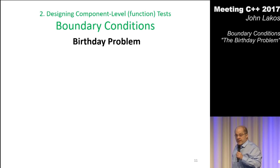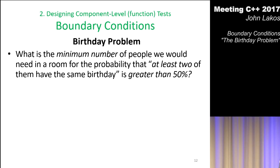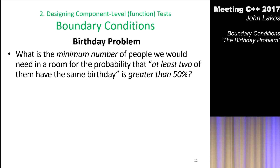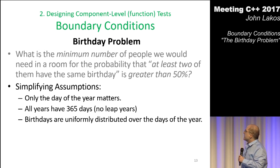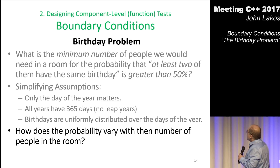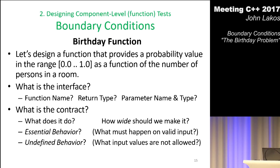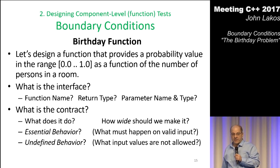The birthday problem — I assume everybody's heard about it. What's the minimum number of people we would need in a room for the probability that at least two of them have the same birthday to be greater than 50%? I want to turn that into a program — something I can test. I have some simplifying assumptions because we could make this harder than it needs to be. So, how does the probability vary with the number of people in the room? That seems like we could write a function for that. Let's design that function.